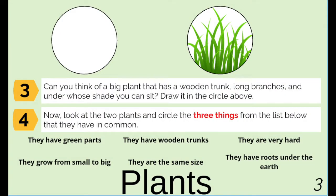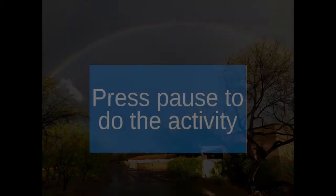Now let's move on to number four. Number four says: now look at the two plants and circle the three things from the list below that they have in common. Once you've finished the animal and plant section, now you get to go outside. Before you go outside, make sure that you have all of the materials that you gathered earlier.